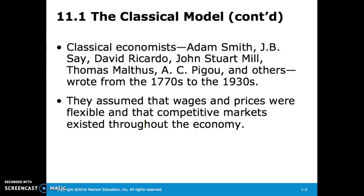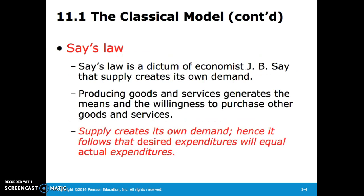Classical economists did most of their writing from the 1770s to the 1930s. They assumed that wages and prices were flexible and that competitive markets existed throughout the economy. Say's Law states that supply creates its own demand, as producing goods and services generates the means and the willingness to purchase other goods and services, hence desired expenditures will equal actual expenditures.